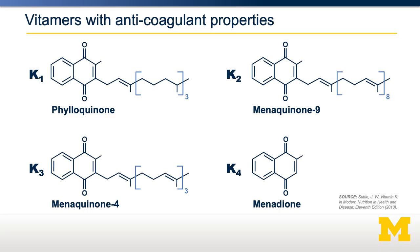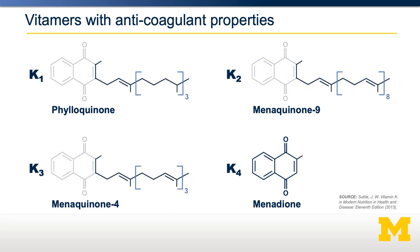Vitamin K actually exists as several vitamins — several different forms that have functionally anticoagulant properties. Shown here are K1, K2, K3, and K4. As you can see, the left-hand side of the structures are identical, but the right-hand fatty acid chains are different depending on their level of saturation and their length.